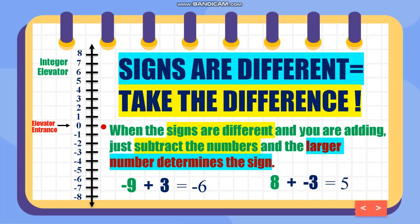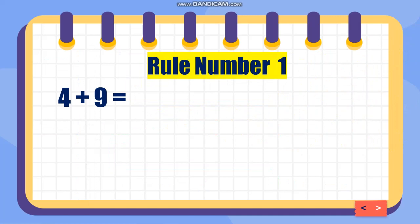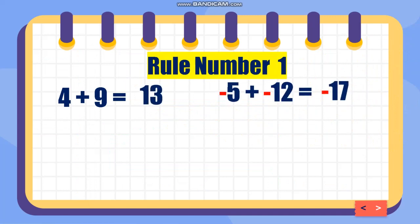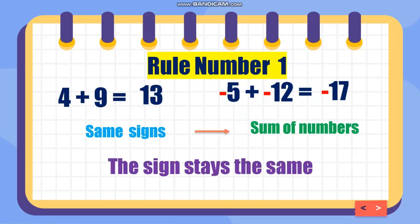For example, negative 9 plus 3 — negative and positive are different signs — so subtract: 9 minus 3 is 6, and the larger number is 9, which is negative. That's why the answer is negative 6. Now we have two rules. Rule number one: if the signs are the same, add the numbers and the sign stays the same. Like 4 plus 9, both positive — that is 13. And negative 5 plus negative 12 — add to get 17, sign stays negative — answer is negative 17.